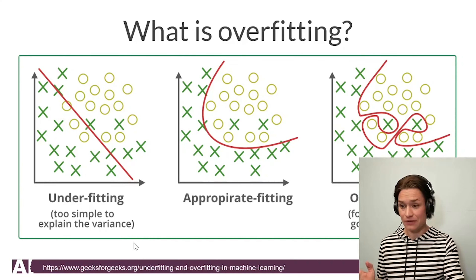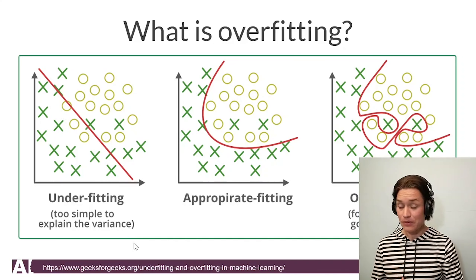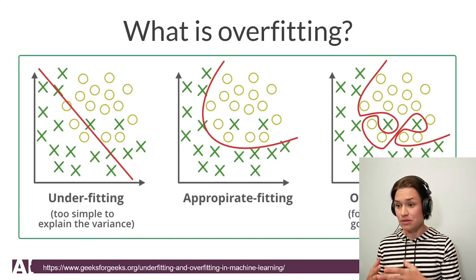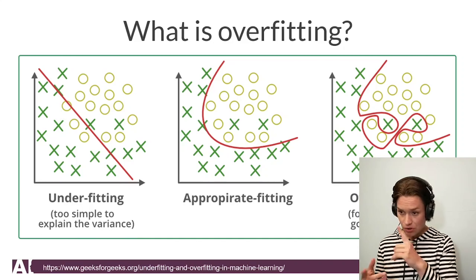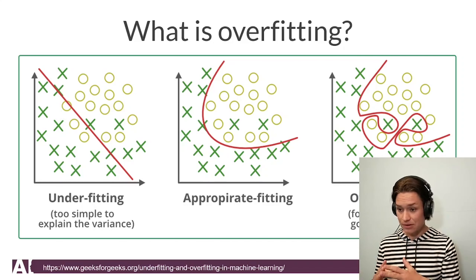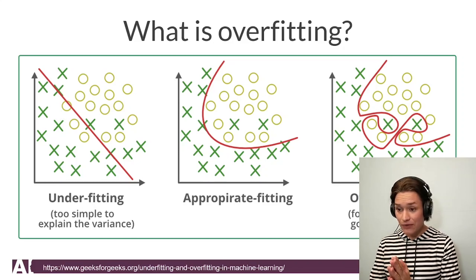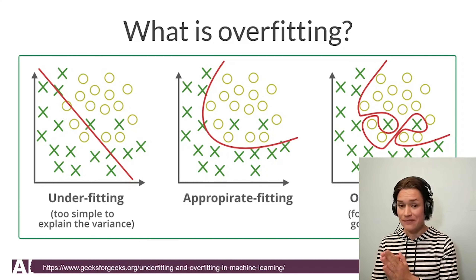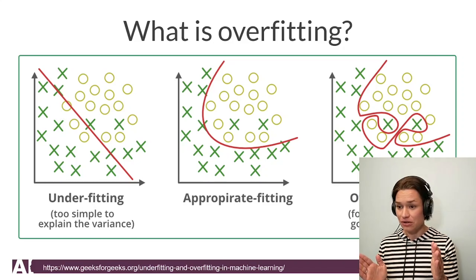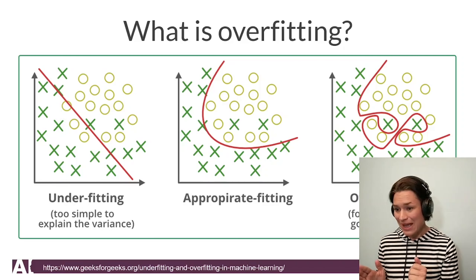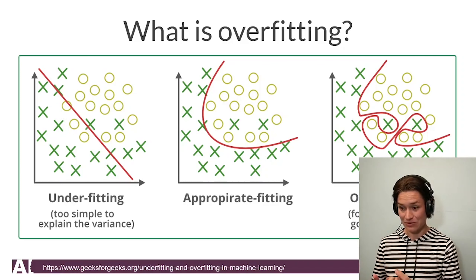What is underfitting? We had this example with cartilage and non-cartilage. Let's say the crosses are cartilage and the circles are the rest. The underfitting case is dividing our cartilage and non-cartilage in some semi-random way, and it's useless for us — we obviously need to do a better job here.